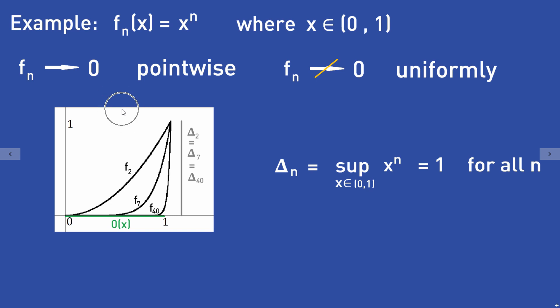In the picture you can also see what is happening. Here I have plotted F2, F7, and F40. We are interested in the largest distance between each of these and the 0 function. You can see in the picture that this largest distance is always 1 — so δ2 = δ7 = δ40 = 1. The largest distance between the functions and the 0 function is always 1, so δN = 1 for all N and does not converge to 0: no uniform convergence.